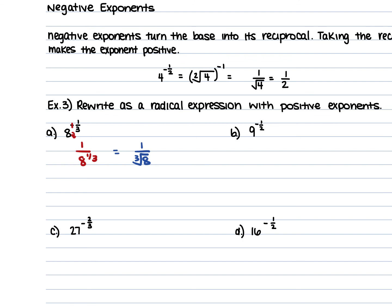The whole idea here is to give your answer with a positive exponent. For example b, we have 9 to the power of negative one-half. Turn the negative one-half into a positive one-half by taking the reciprocal of 9, giving 1 over 9 to the power of one-half. Another way to write this is to have one-ninth raised to the one-half power — that means the same exact thing. So if you're more comfortable writing either form, both are acceptable.